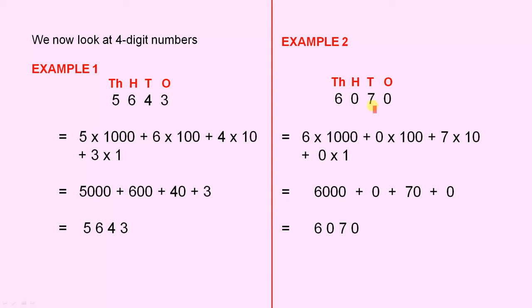6,070. 6 times 1000, plus 0 times 100, plus 7 times 10, plus 0 times 1. That's 6,000 plus 0, plus 70, plus 0, which is 6,070.